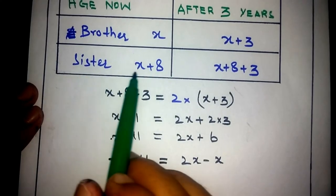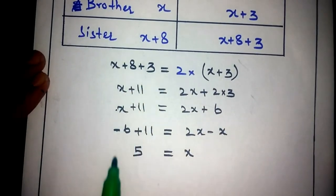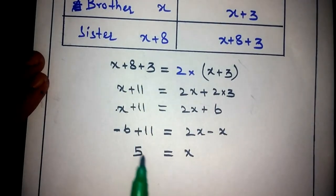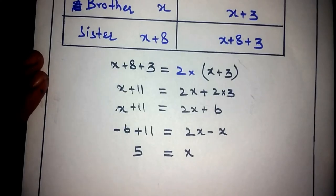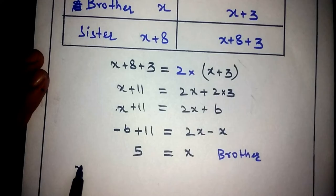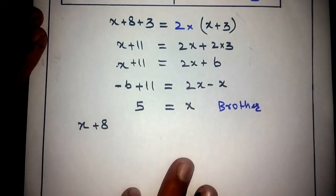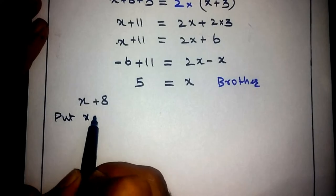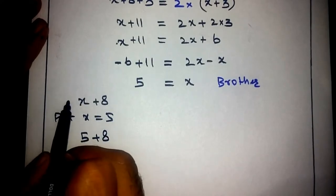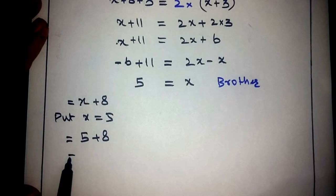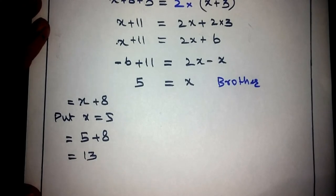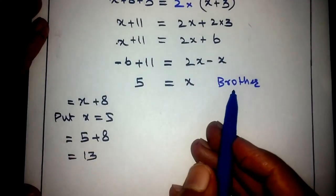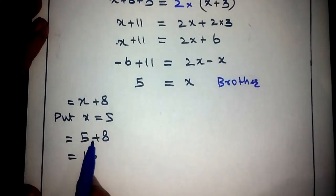The next step is to find the present age of the sister. The sister's age is X plus 8. We substitute the value of X equals 5 into this equation: 5 plus 8 equals 13. So the age of the brother is 5 and the age of the sister is 13.